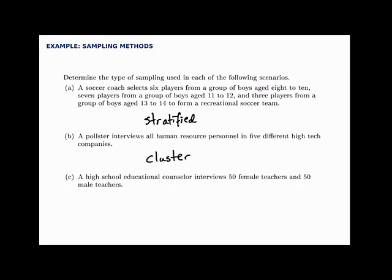The third example: a high school educational counselor interviews 50 female teachers and 50 male teachers. Notice again there's a separation of categories — teachers separated into male and female. They've been divided into groups, and then from those groups some have been selected — an equal number from each — which again looks like stratified sampling.